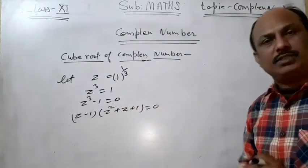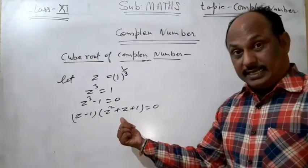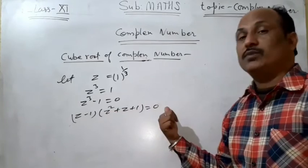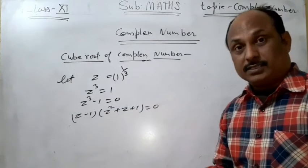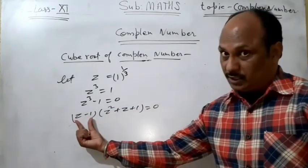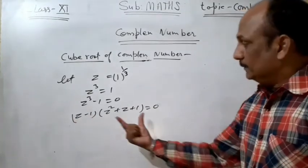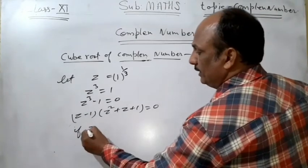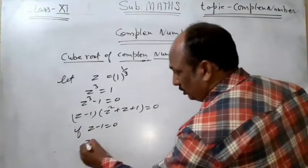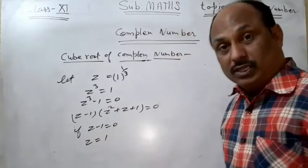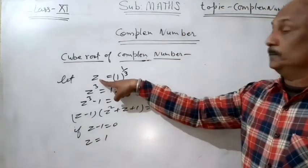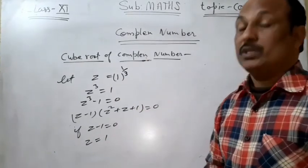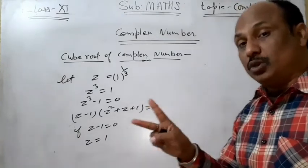This is our identity. There is a product of two values equal to 0. It means either (z - 1) = 0 giving z = 1, or the quadratic factor equals 0. So one cube root of 1 is z = 1.